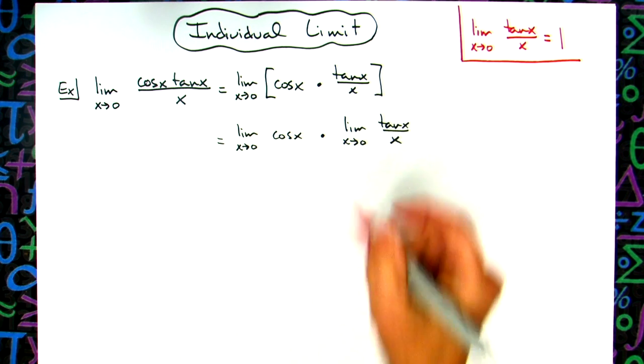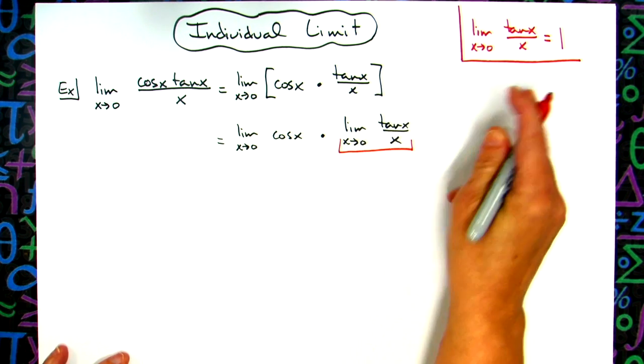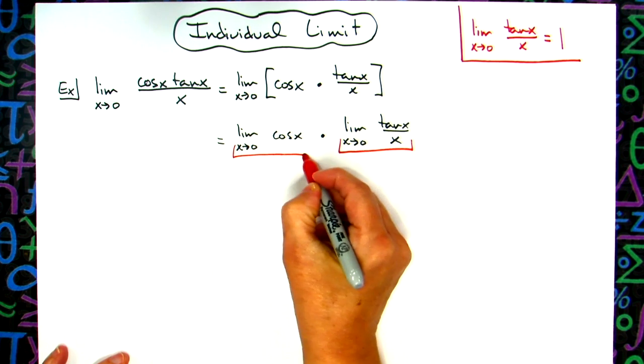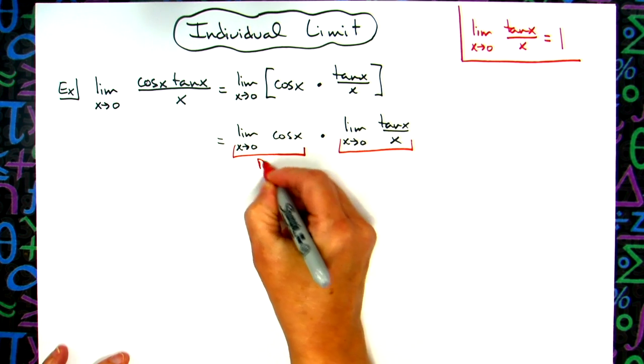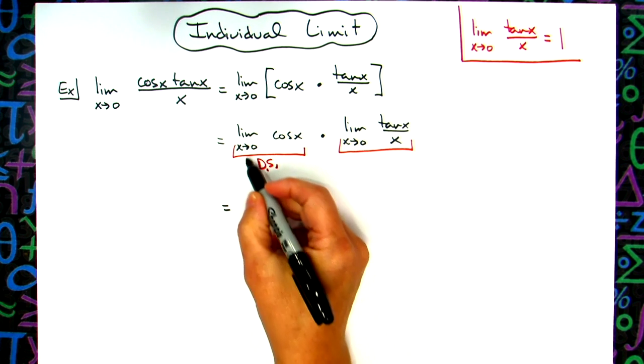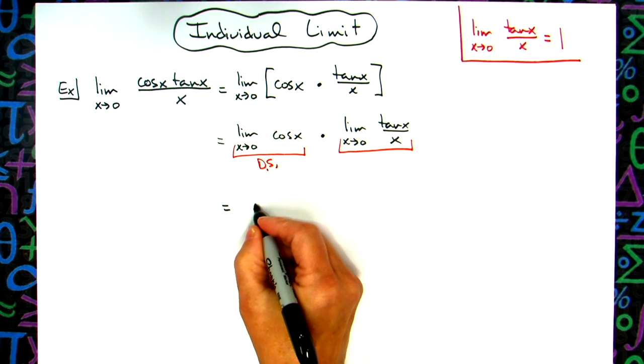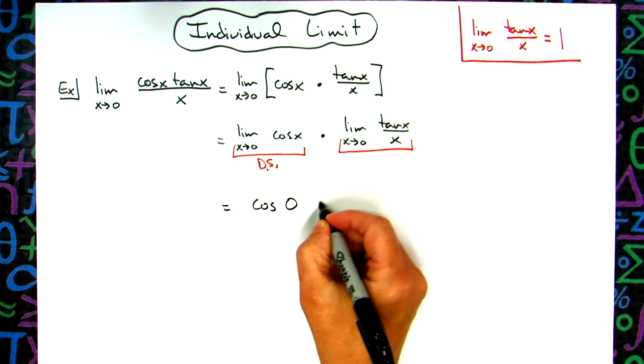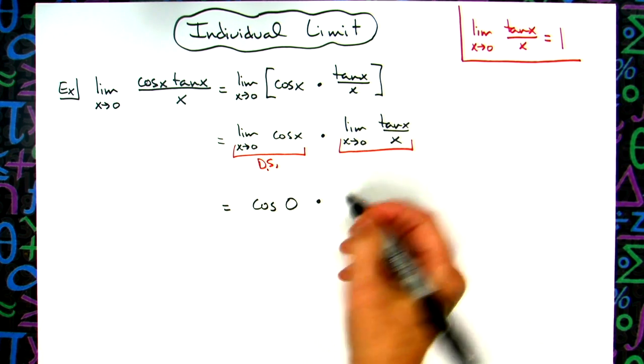This one we know to be 1. This one here is going to be a direct substitution. So on my next line I'm going to drop the limit notation and plug in the 0, so I'll have cosine of 0 times what I know this to be, which is 1.